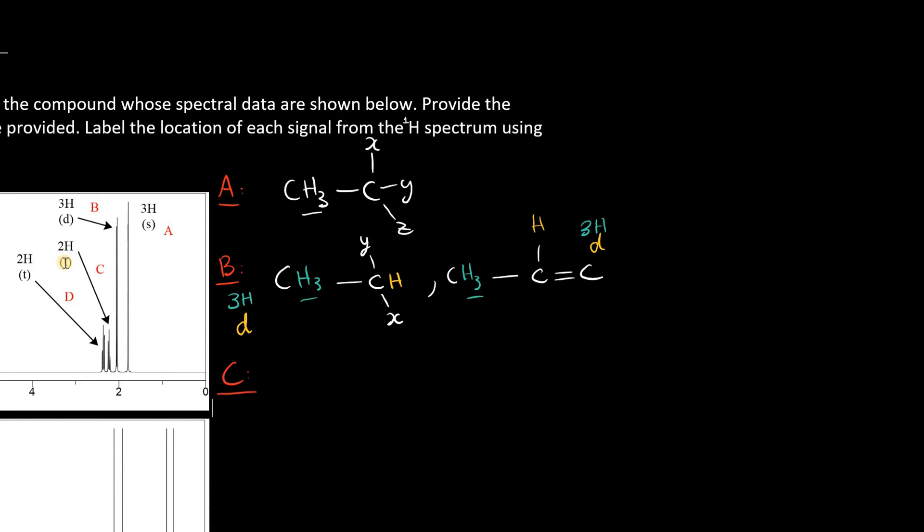Signal C is a 2H triplet, which means it's adjacent to two hydrogens only. It's pretty low in frequency, close to two parts per million, so it's probably part of a hydrocarbon chain, and it's adjacent to another CH2 group, which I see here in signal D, another 2H triplet, a little higher in frequency. So my guess is that I have a CH2 group, which is then bound to another CH2 group, and on both sides of this C2H4 group, I don't have proton bearing groups. So I'll just put X, Y, and Z for now.